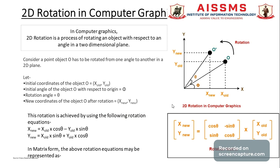Consider how point O has to be rotated from one angle to another in a 2D plane — that is known as rotation. In this diagram, we have a representation of 2D rotation. The object O, after rotating by angle theta in a 2D plane, moves to a new point O'. The initial coordinates of object O are X_old and Y_old. The rotation angle is theta, and the new coordinates after rotation are X_new and Y_new of point O'.